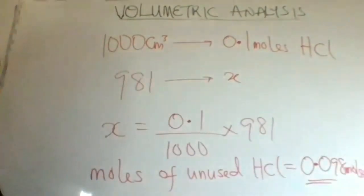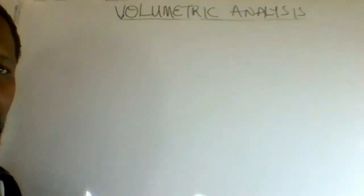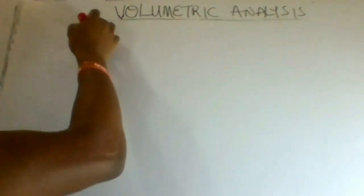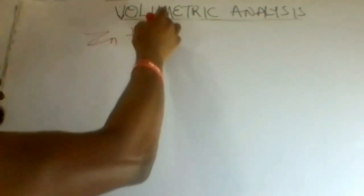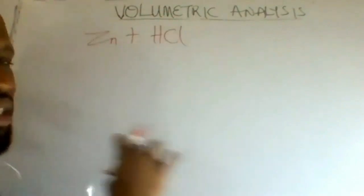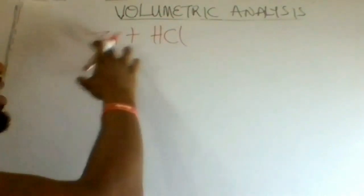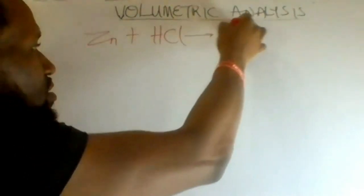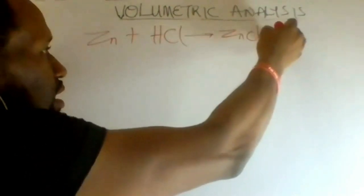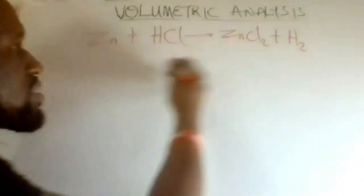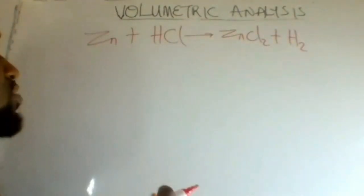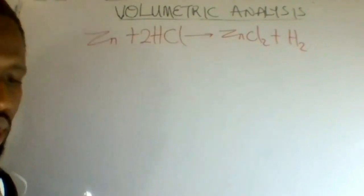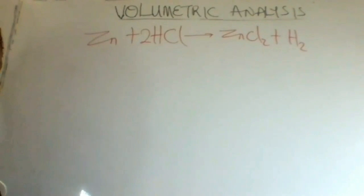The first line of the question gave us zinc reacting with hydrochloric acid. The products here are zinc chloride and hydrogen gas. Balancing this out, we have two moles of HCl reacting with one mole of zinc.